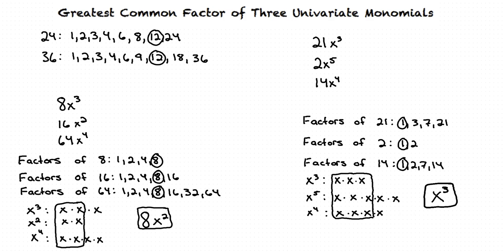Alright, so first we need to list the factors of the coefficients of each monomial. Then we factor the variables of each monomial as a product of prime factors. Finally, we combine the Greatest Common Factor for the coefficients and variables to find the Greatest Common Factor of the three expressions. You got it!